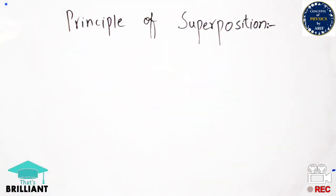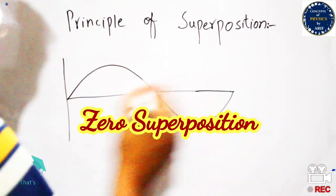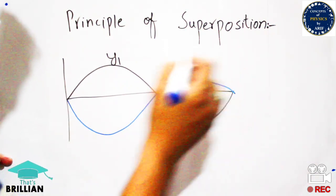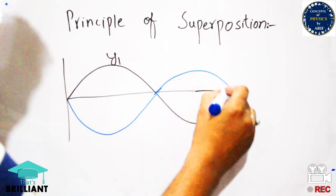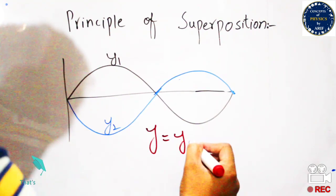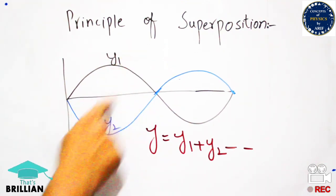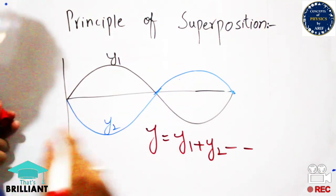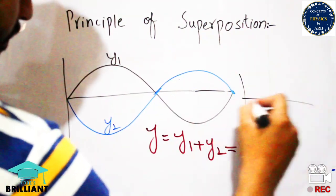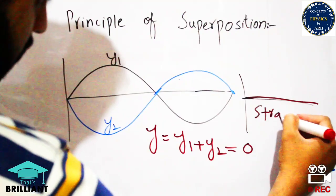I will also discuss zero superposition. Zero superposition also involves sinusoidal waves, in which wave y1 is produced, but another wave y2 is produced in the opposite direction — 180 degrees out of phase with y1, because the crest of y1 falls on the trough of y2. When these two waves are added according to the principle of superposition, they cancel out with each other and the final result is zero — a straight line.